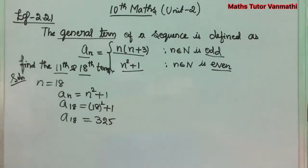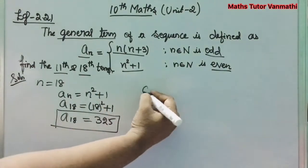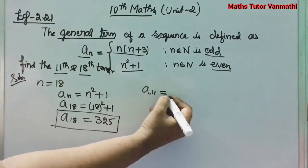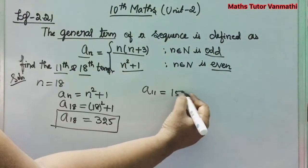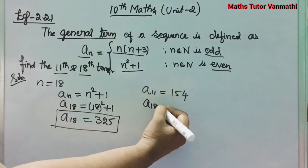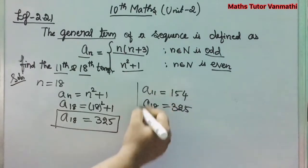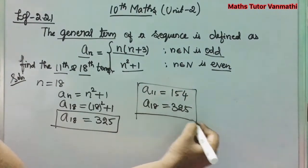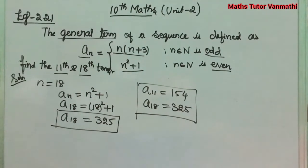So the final answers for example 2.21 are: a_11 = 154 and a_18 = 325. Next we can see example 2.22.